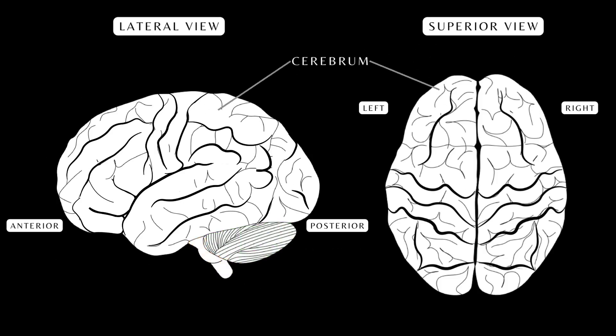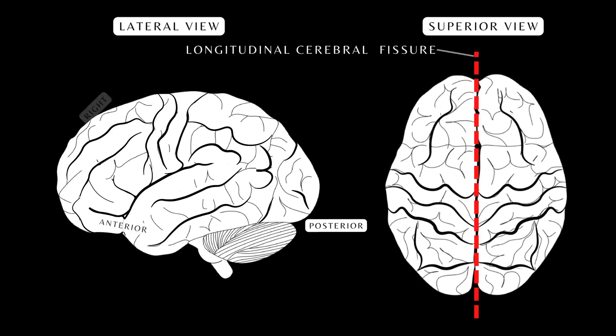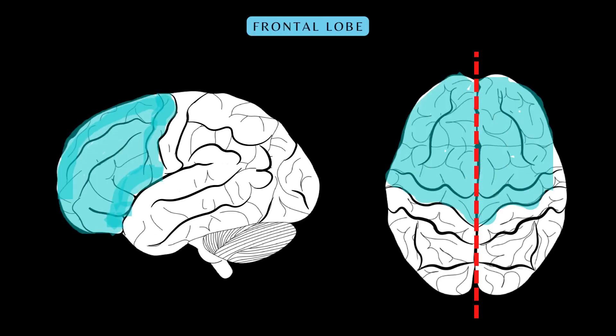The cerebrum is the largest part of the brain and is responsible for a wide variety of important functions. It is divided into two halves, as seen in the superior view. Here's the longitudinal cerebral fissure, which is the space located between the two halves — the left and right cerebral hemispheres.